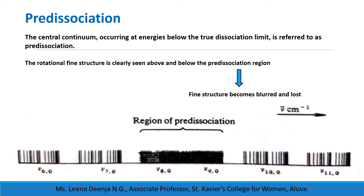A diagrammatic illustration of the appearance of predissociation is shown here. The rotational fine structure is clearly seen above and below the predissociation region, but in this region the fine structure becomes blurred and lost.